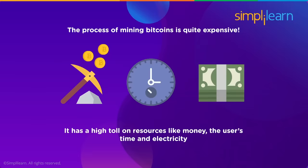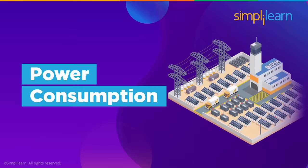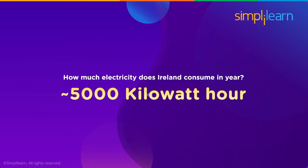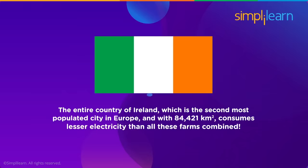Processing power: mining bitcoins is an expensive process requiring money, time, and electricity. Miners use servers dedicated specifically for that purpose — the faster you process the data, the faster a block can be added to the blockchain and the faster you're rewarded. Power consumption: all Bitcoin mining farms together consume approximately 60 terawatt hours — roughly 6×10¹⁰ kilowatt hours — which is more electricity than the entire country of Ireland consumes in a year.